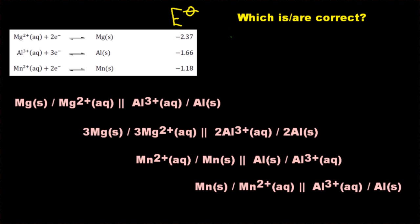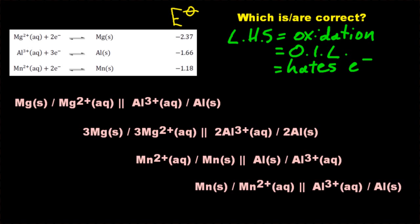Let's look at some questions: which of these are correct? Pause the video... even I don't pause videos, just carry on. I don't want to think, just explain it to me thoroughly. So the left-hand side has to be oxidation, and oxidation is loss of electrons, and I think of it as the one that hates electrons the most.